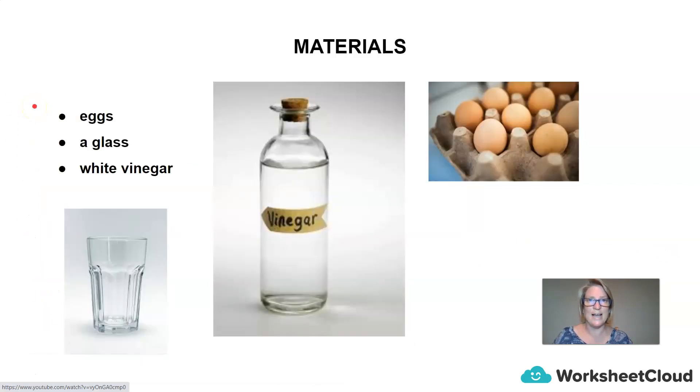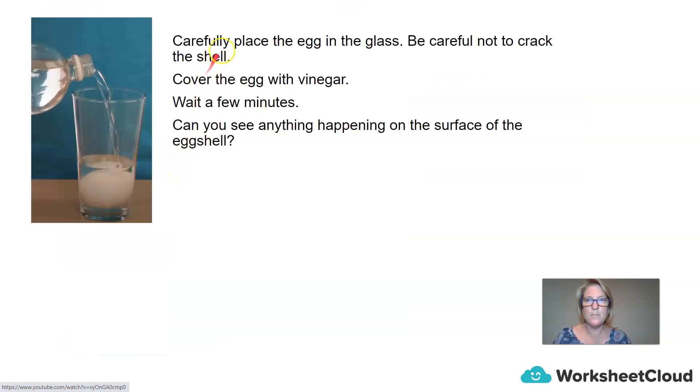How awesome was that and I would really love for you to carry out this experiment at home. So I hope after this lesson you're going to get all these materials ready and you can see for yourself what does an egg look like inside if we take away the shell. So the materials you'll need for this is an egg, a glass or a container, and some white vinegar. Carefully place the egg in the glass, so be very careful not to crack the shell. Cover the egg with vinegar and wait for a few minutes. Can you see anything happening on the surface of the eggshell?